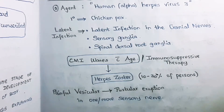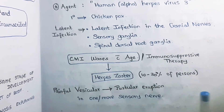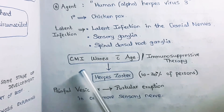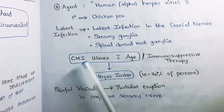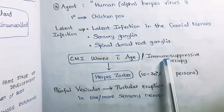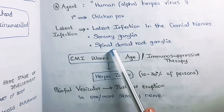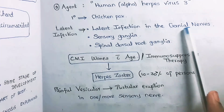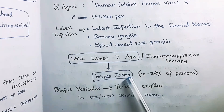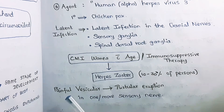The latent infection is mainly reactivated in immunocompromised patients — those on immunosuppressive therapy where cell-mediated immunity may be decreased, or where cell-mediated immunity naturally wanes with increased age. In both cases, the latent infection present in the sensory ganglion, spinal dorsal root ganglion, or cranial nerves may come back and cause herpes zoster. This occurs in 10 to 30% of patients infected with chickenpox.